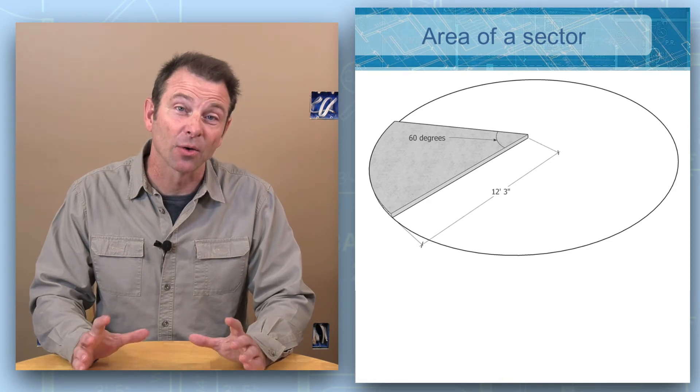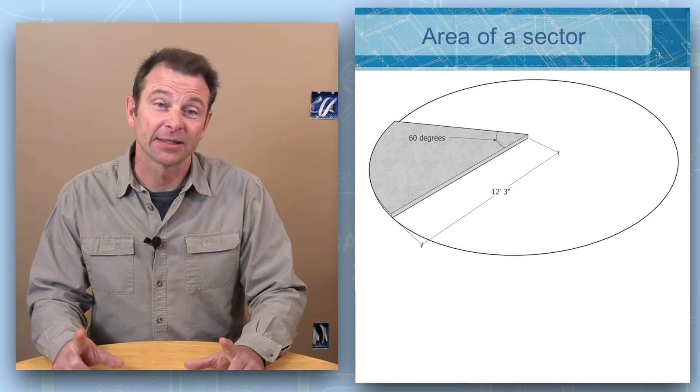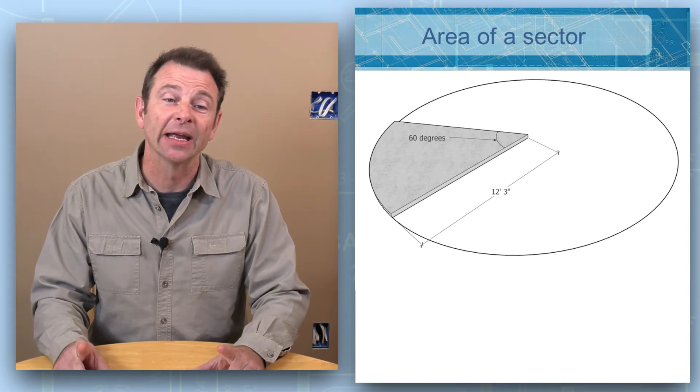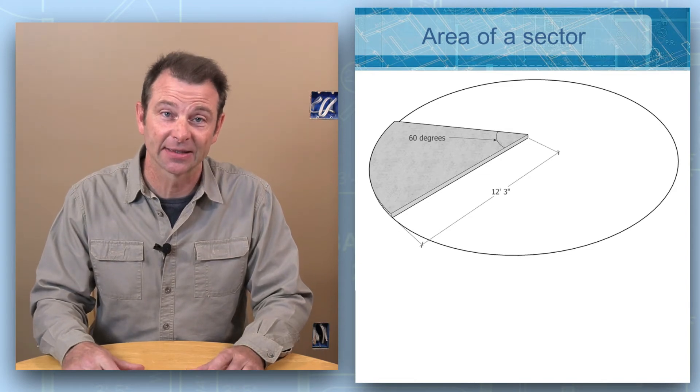If we wanted to know what the area was of a part or portion of this circle, we would call it in math a sector. A sector is a fancy name for a portion of a circle that is defined by two radius or two radii.